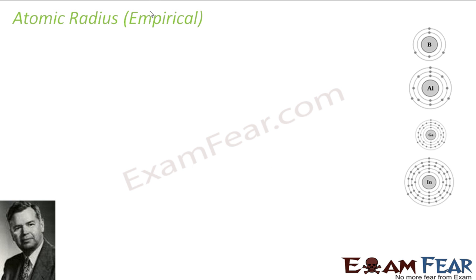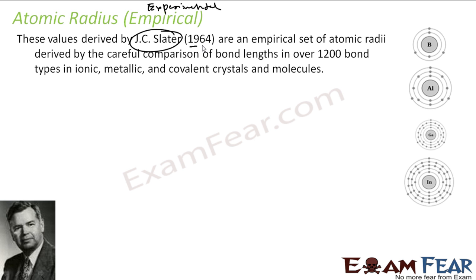So what happened is, this guy J.C. Slater in 1964, what he did was, he did a careful comparison between the bond length of over 12,000 bond types in ionic, metallic, and covalent crystals. For example, if you talk about hydrogen itself, hydrogen sometimes forms bond with carbon, sometimes with oxygen, sometimes with nitrogen. So these bond lengths for hydrogen in all these cases will differ because the bond length depends on the amount of attraction between the carbon-hydrogen or hydrogen-oxygen or nitrogen-hydrogen or phosphorus-hydrogen.